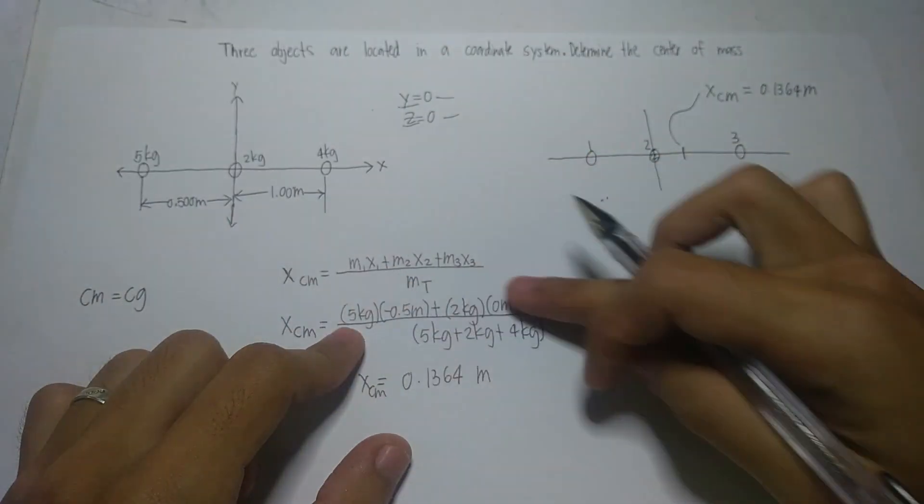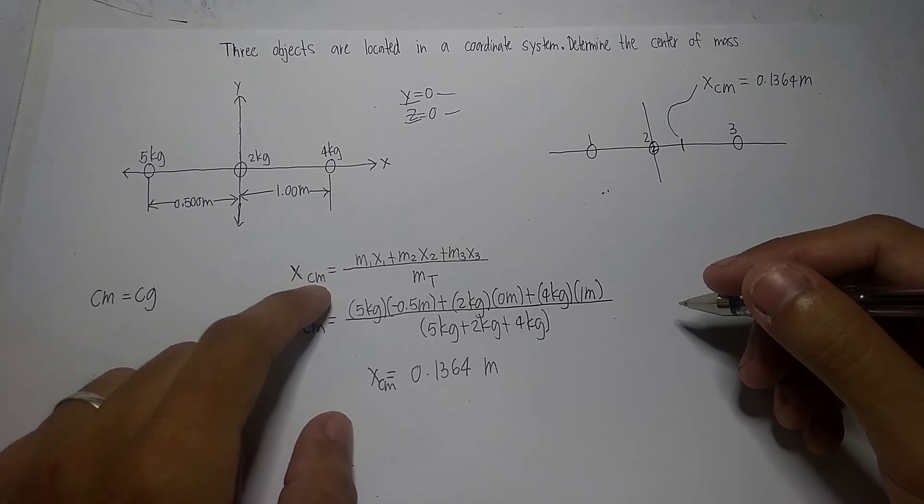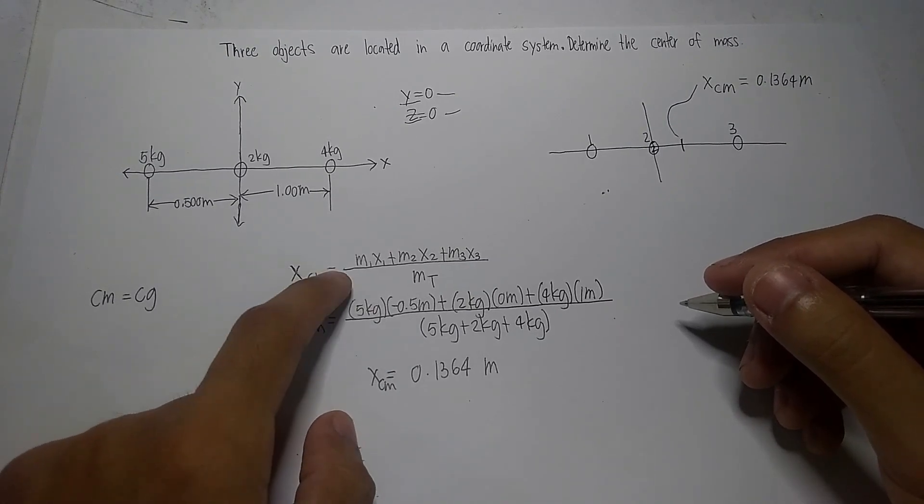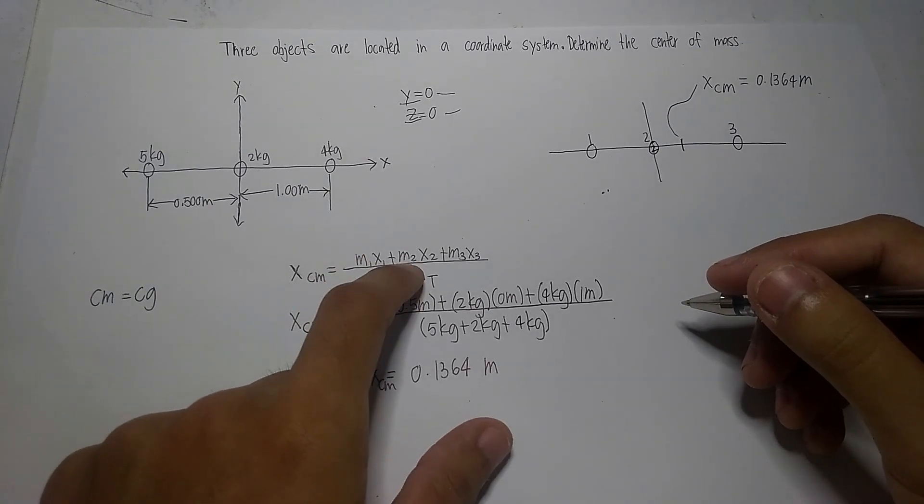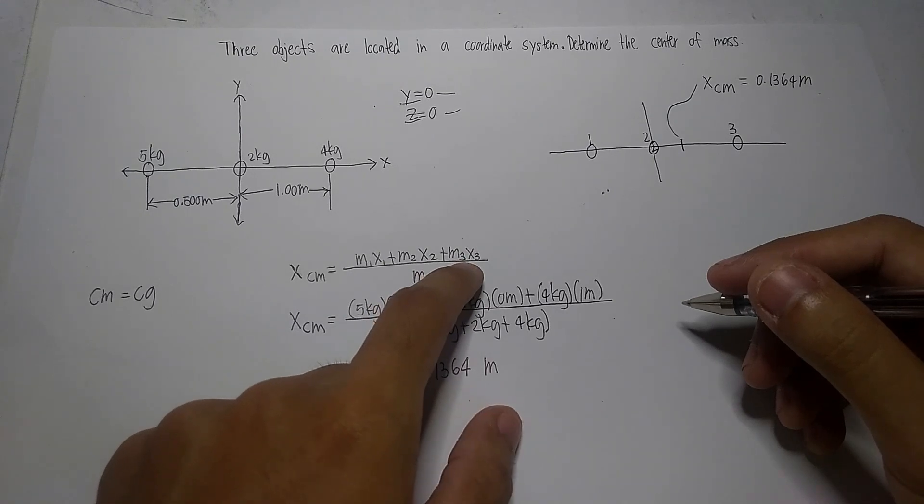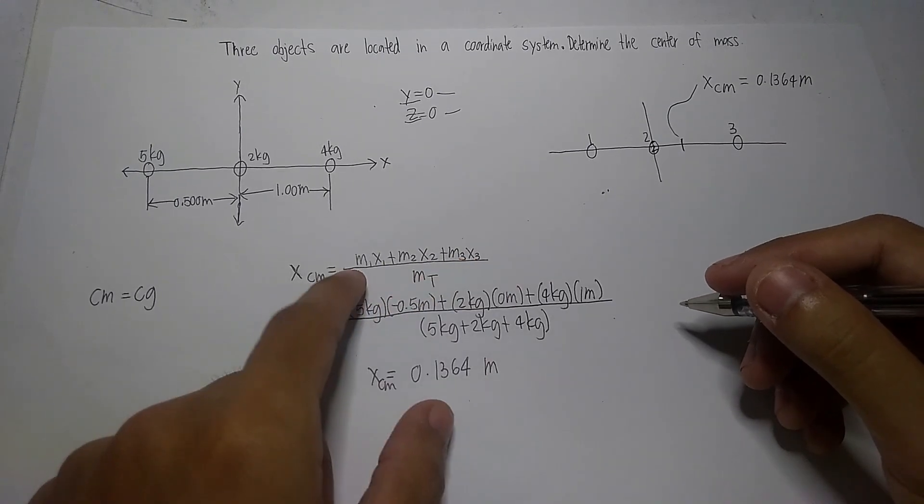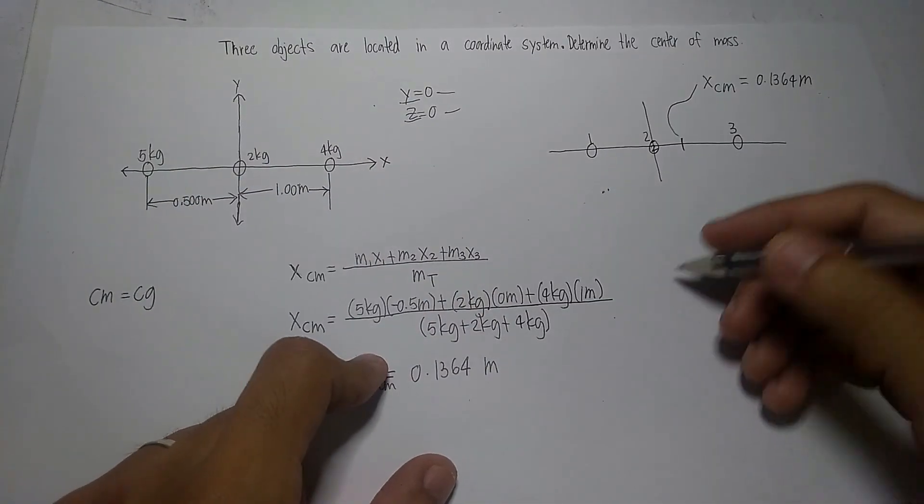That being stated, we will utilize this formula. The formula is x sub cm or center of mass is equal to m sub 1 multiplied by x sub 1 plus m sub 2 multiplied by x sub 2 plus m sub 3 multiplied by x sub 3, all over the total mass of the three objects.